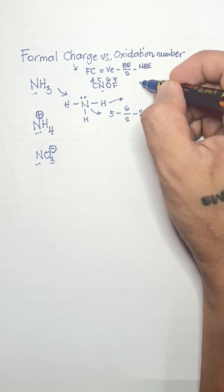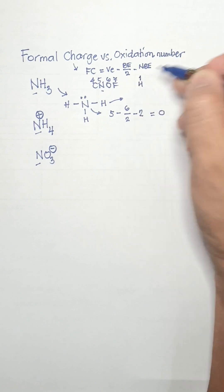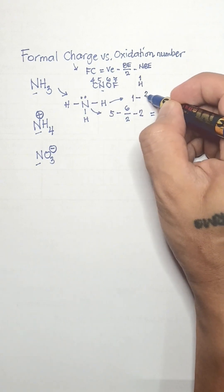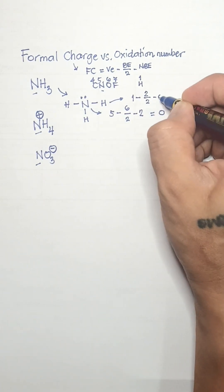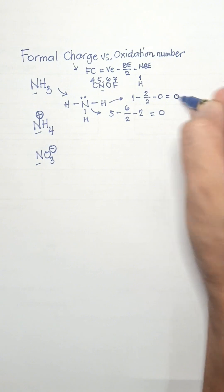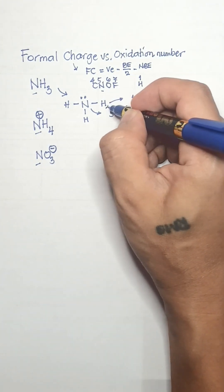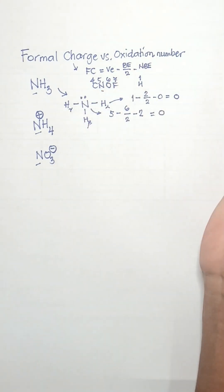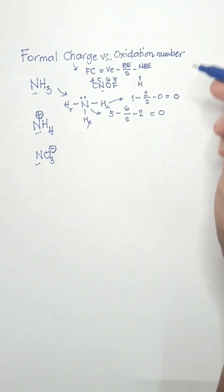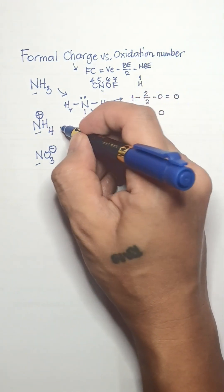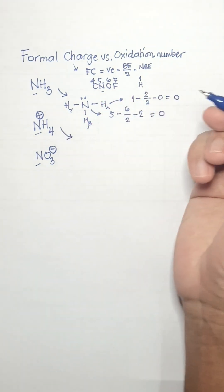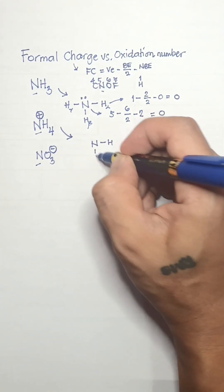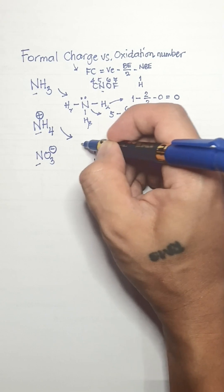For hydrogen, it belongs to group 1, meaning its valence electron is 1, minus 2 over 2 (the number of bonding electrons), minus 0 because it has no non-bonding electrons. The formal charge for hydrogen is 0. Since all three hydrogens are equivalent, they all have a formal charge of 0.